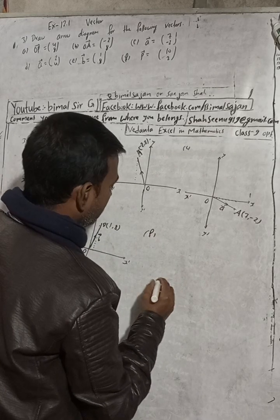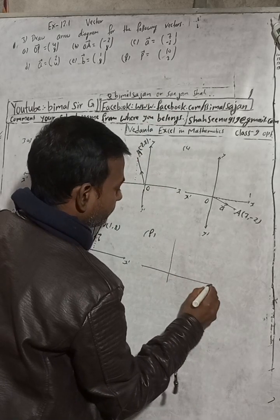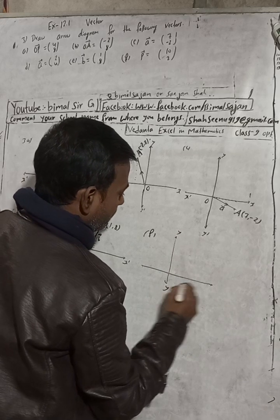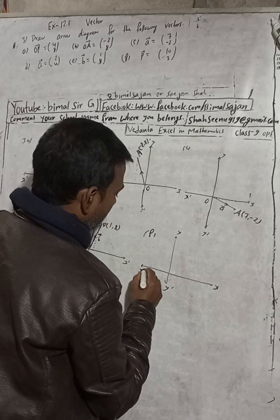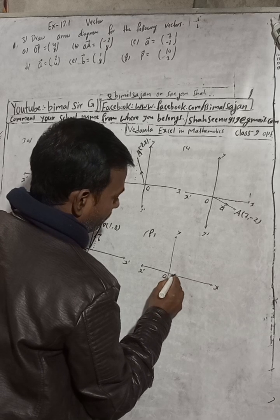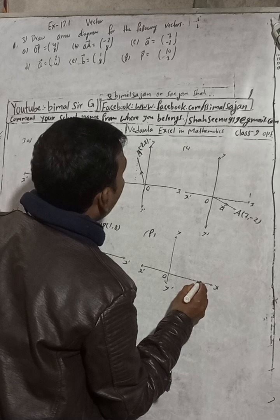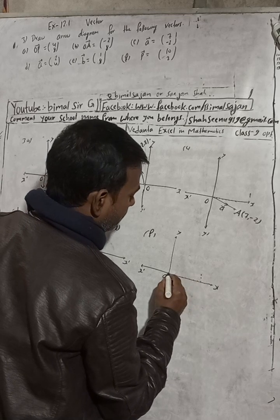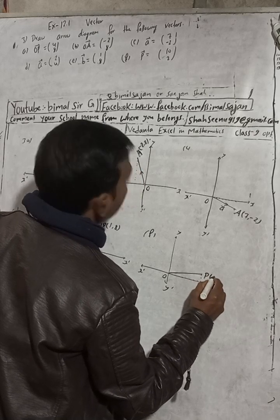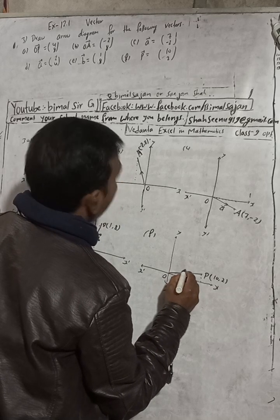Now part (f): small 'p' vector. Both coordinates are positive so it is in the first quadrant. Ten comma two means go ten to the right side and two upward. This is our capital P point at ten comma two, and from the origin to this point is small 'p' vector.